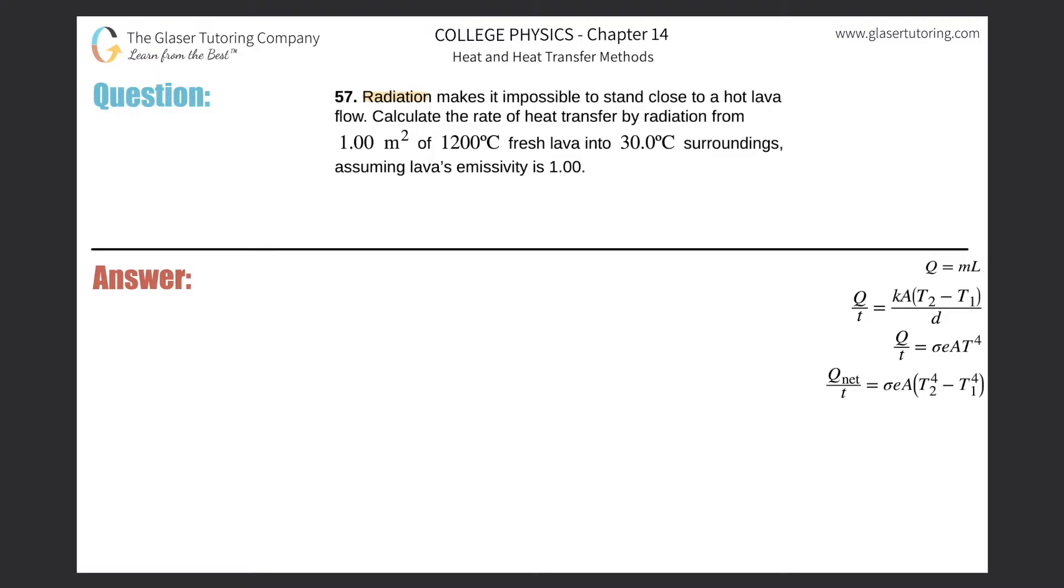Number 57: Radiation makes it impossible to stand close to a hot lava flow. Calculate the rate of heat transfer by radiation from 1 m² of 1200°C fresh lava into 30°C surroundings, assuming the lava's emissivity is 1.00.